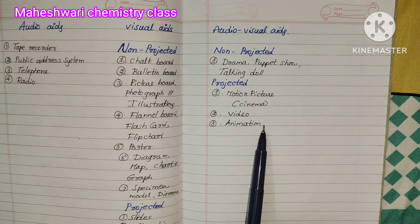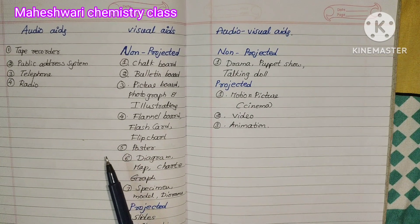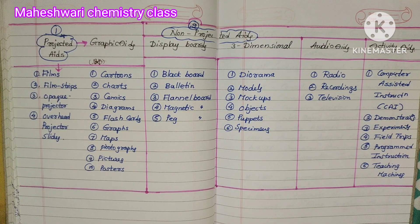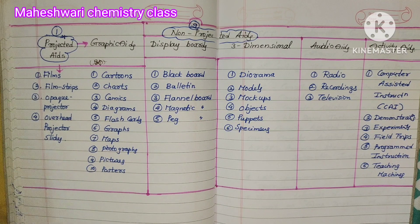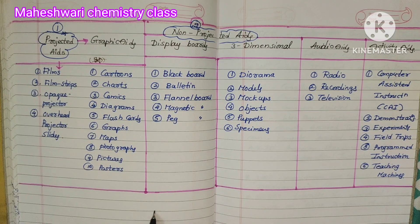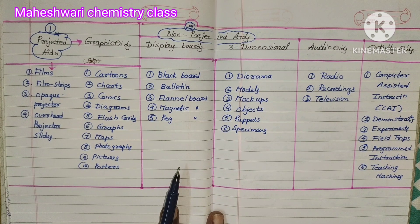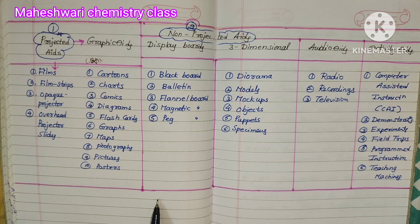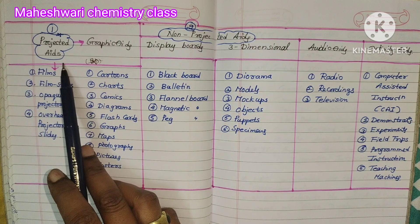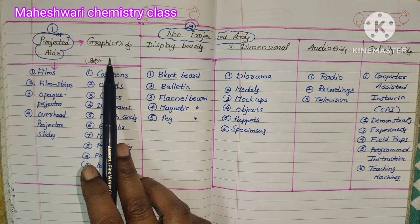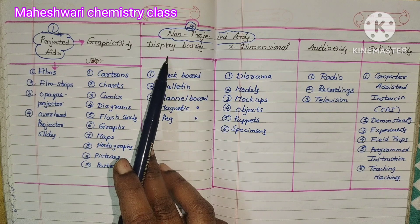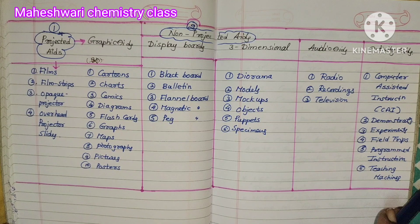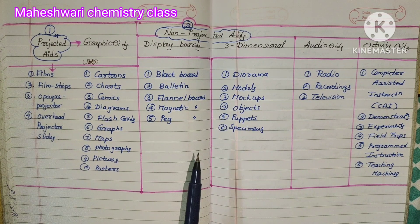Next, audio-visual classification: projected aids and non-projected aids are the two types. Graphic aids, display boards, 3D dimensional aids, audio aids, and activity aids. Projected aids include films, film strips, opaque projector, overhead projector, and slides.